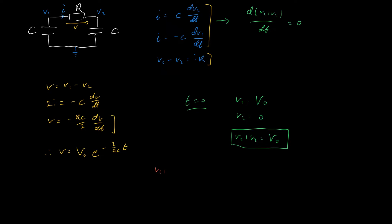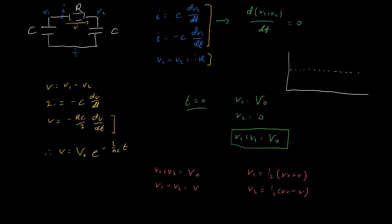In summary, we have V1 plus V2 equals V0 and V1 minus V2 equals V, giving us V1 equals one half V0 plus V, and V2 equals one half V0 minus V. If I draw a graph, the capacitor on the left starts at V0 and decays down to one half V0, while the capacitor on the right starts at zero and charges up to one half V0.